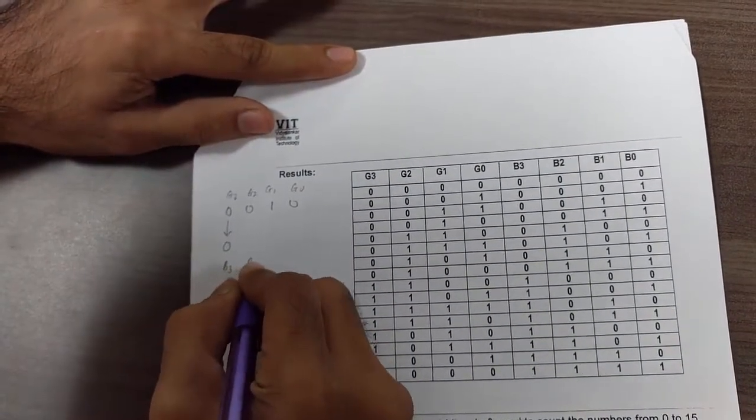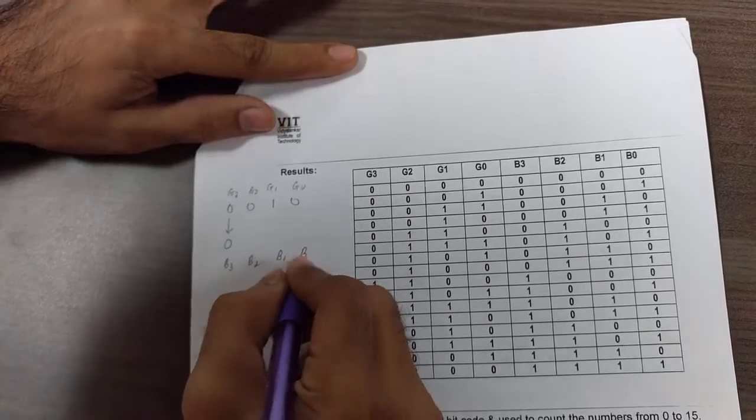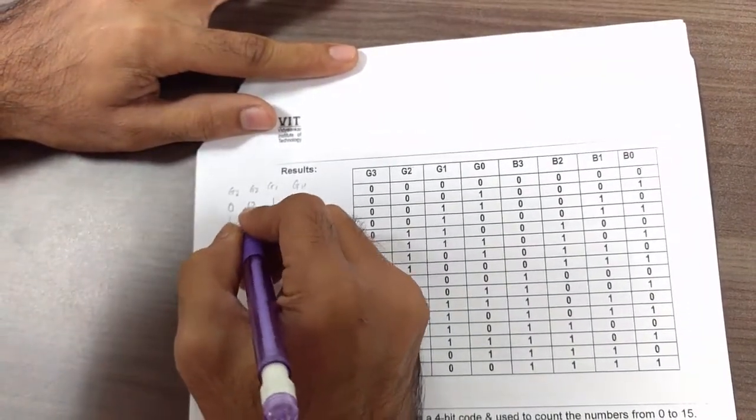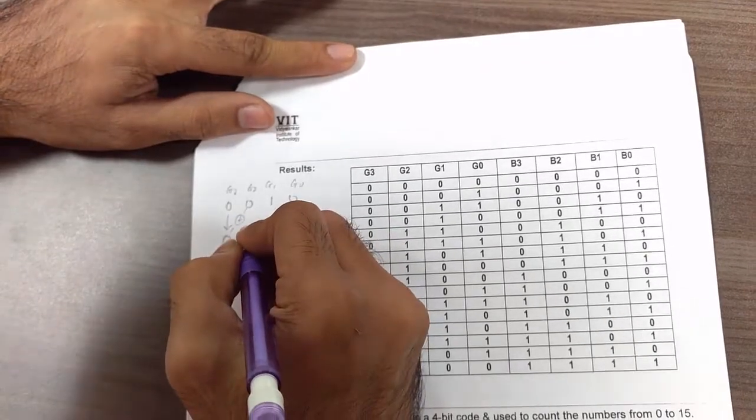B2, B1 and B0. Now this digit and this digit is XOR. Now 0 XOR 0, I will get 0.